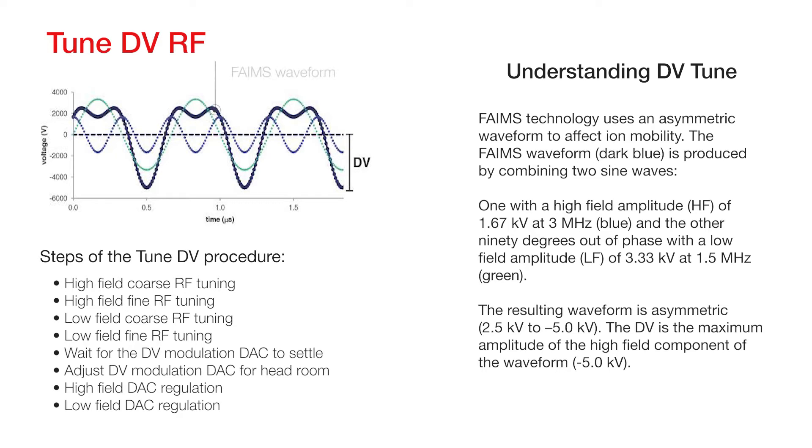The FAIMS waveform, shown here in dark blue, is produced by combining two sine waves: one with a high electric field amplitude of 1.67 kV at 3 MHz, shown in blue, and the other 90 degrees out of phase, with a low electric field amplitude of 3.33 kV at 1.5 MHz, shown in green. The resulting waveform is asymmetric, 2.5 kV to negative 5.0 kV.